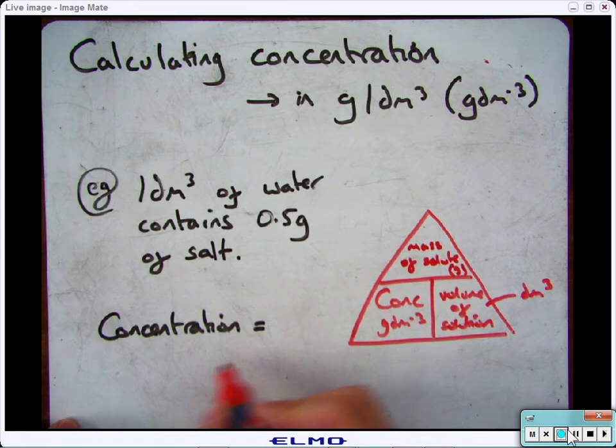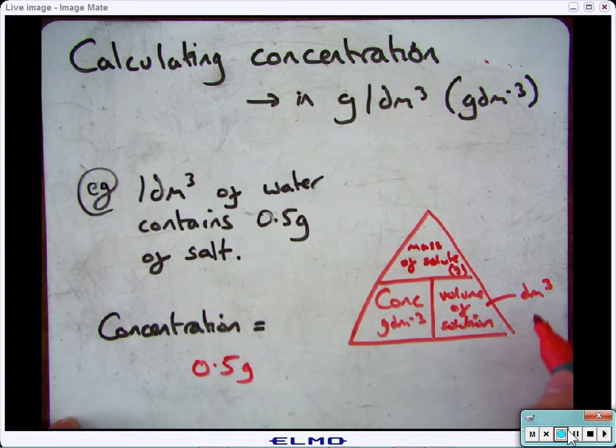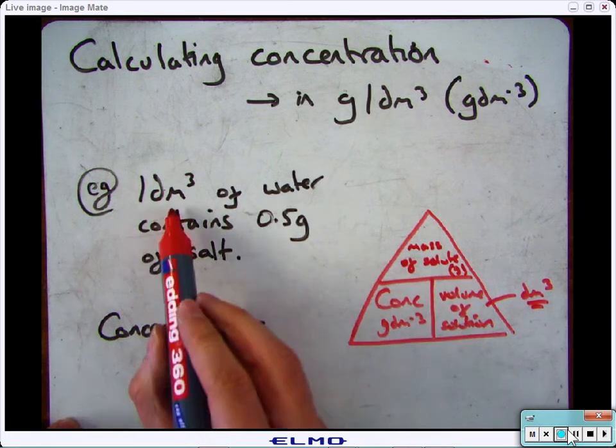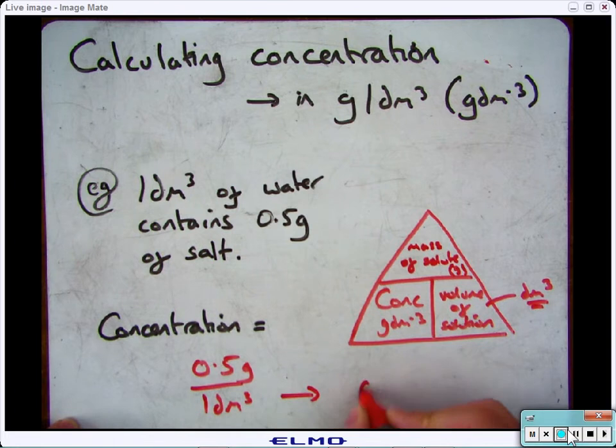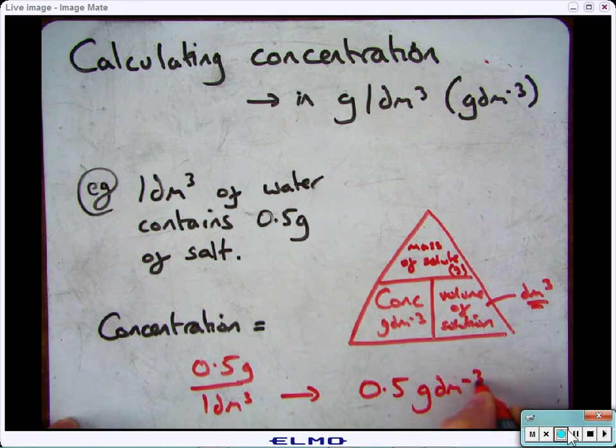So the mass in this case is 0.5 divided by the volume which has got to be in decimetre cubed, which is 1, which gives you 0.5 grams per decimetre cubed.